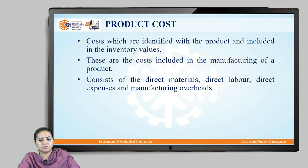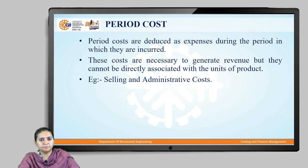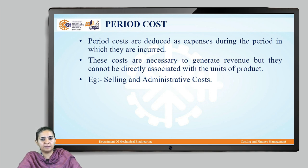Lastly, we have classification as product cost and period cost. Product costs are costs identified with the product and included in inventory value — costs directly traceable to a particular product, including direct materials, direct labor, direct expenses, and manufacturing overheads. Period costs are expenses incurred during a particular period that are necessary to generate revenue but cannot be directly associated with units of product. They are indirect costs that cannot easily be attributed to a particular product — for example, selling and administrative costs.